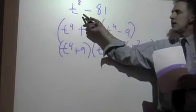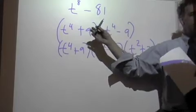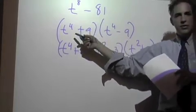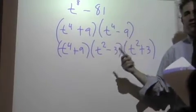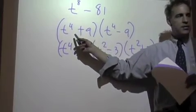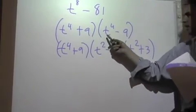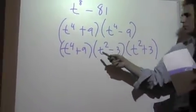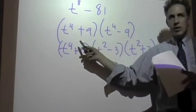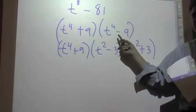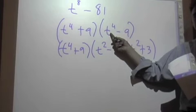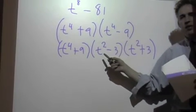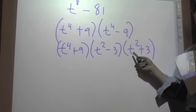Good job. Okay. T to the 8th minus 81. This is just a quick reminder that you have to continue to factor as long as you possibly can. This is equal, because it's difference of squares, it's t to the 4th plus 9, times t to the 4th minus 9. Well, we can't factor anything that's a sum of squares, but we can continue to factor the difference of more squares. T to the 4th is a perfect square, so is 9. So that ends up being t squared minus 3 times t squared plus 3, but the same, very same factory by difference of squares rules.